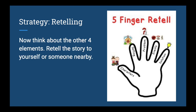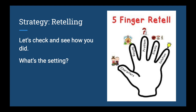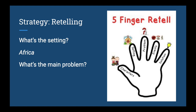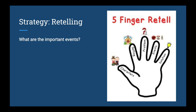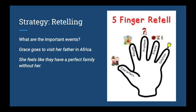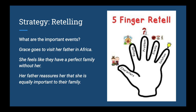Now think about the other four elements in a five-finger retell — the setting, the problem, the events, and the solution. You can retell the story to yourself or tell it to someone nearby. The setting is Africa. The main problem is that Grace wants a storybook family. The important events are: Grace goes to visit her father in Africa; she feels like they have a perfect family without her; her father reassures her that she is equally important to their family. And finally, Grace comes to realize that her family is great just as it is.